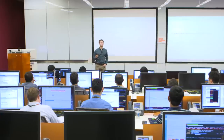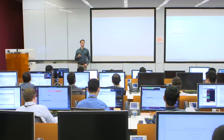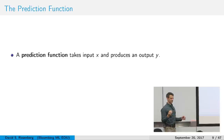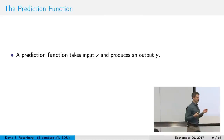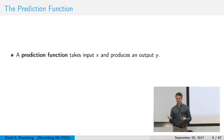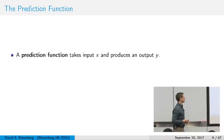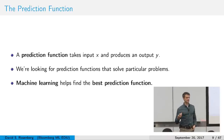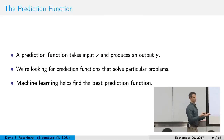Now let's get into vocabulary. The first and arguably most important concept is the prediction function. Making a prediction function is the ultimate goal of machine learning. The prediction function is the thing that actually takes the input x and produces the output y. It's the thing that solves the problem you set out to solve. Machine learning is basically the way that we produce this prediction function.